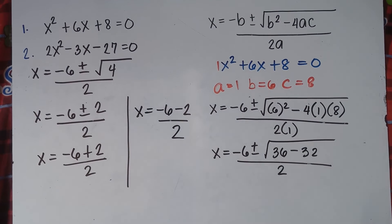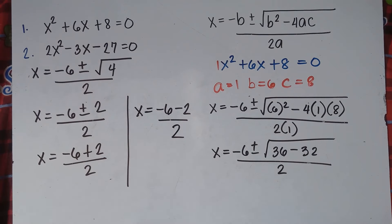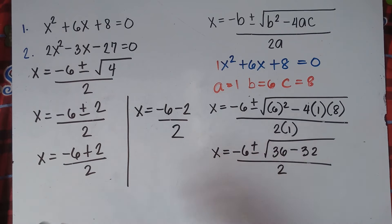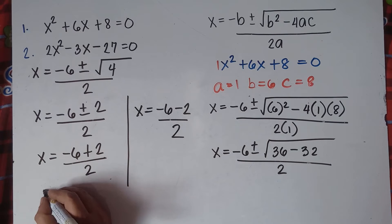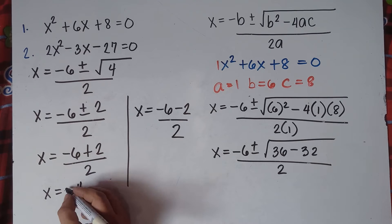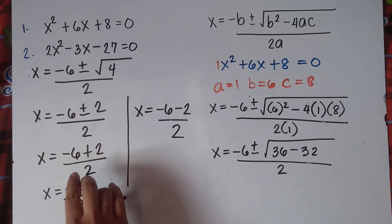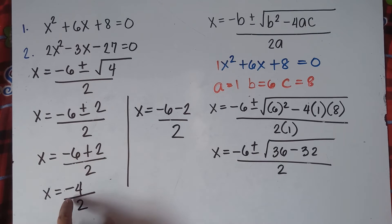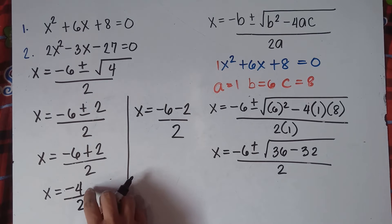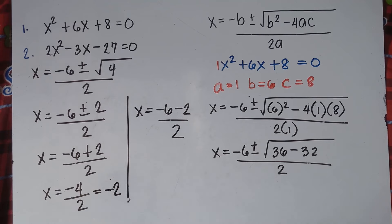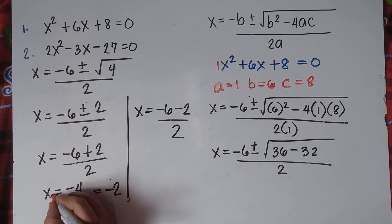For x₁: we have (−6+2)/2. When adding integers with unlike signs, you subtract: 6 minus 2 is 4, then copy the sign of the larger number. Since 6 is greater than 2, copy the negative sign, giving −4. Then −4 divided by 2: dividing unlike signs always gives a negative answer, so x₁ = −2.